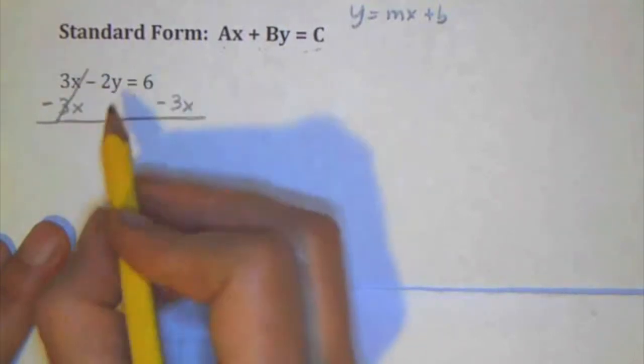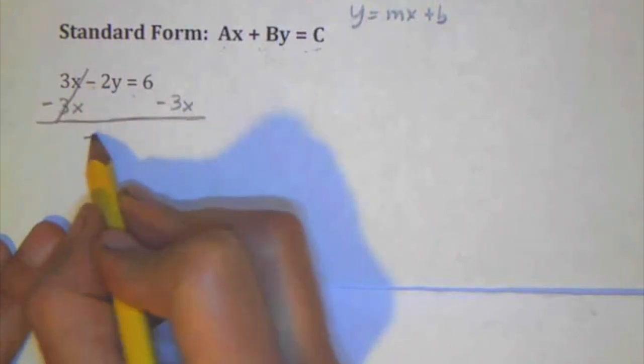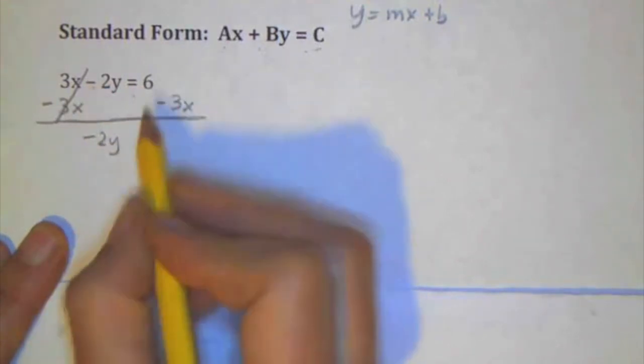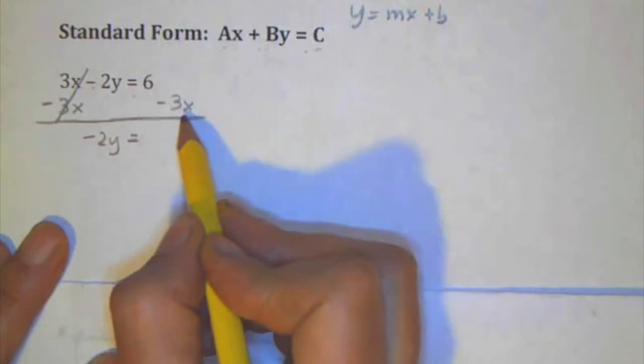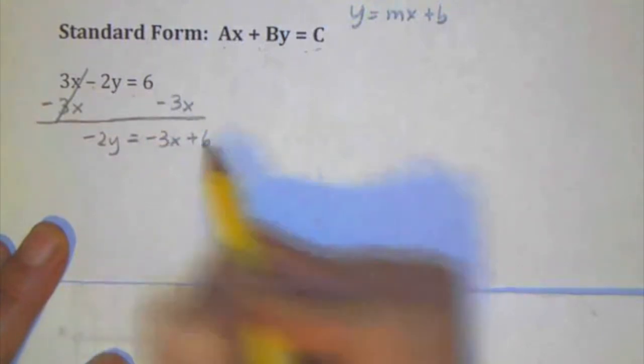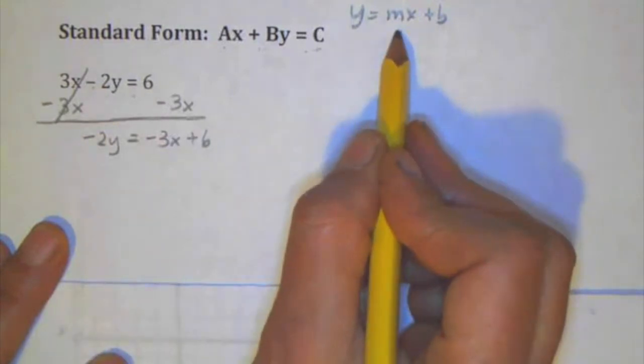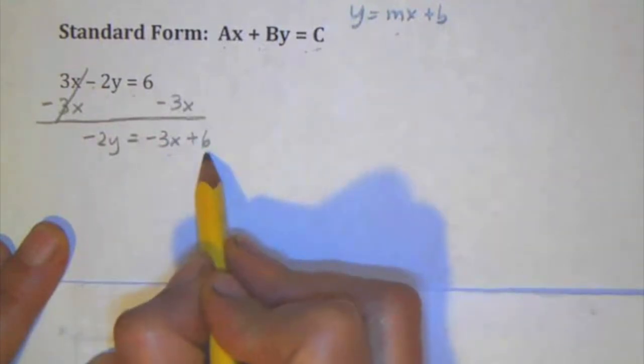So 3x minus 3x is zero. Make sure you don't lose that negative sign, so that's a common mistake. Negative 2y equals, I'm going to use the commutative property here, which allows me to go 6 minus 3x is the same as negative 3x plus 6, just so that I start getting more into this slope-intercept form, where it's x first and then a constant later.